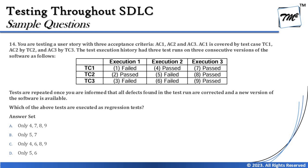After reporting failures 5 and 6 to the developer and receiving the next build, execution 3 was performed. In execution 3, test run 7 (TC1 repeated) was done as regression testing since TC1 had passed in execution 2, whereas runs 8 and 9 (TC2 and TC3) were performed as confirmation testing. So tests 5 and 7 were the runs performed as regression tests.